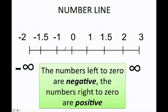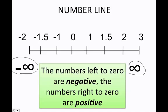The number line. The number line shows you that the numbers to the left of zero are negative and the numbers to the right of zero are positive. These signs mean negative infinity and positive infinity. As you can see, the number line goes from positive infinity to negative infinity, with zero in the middle.